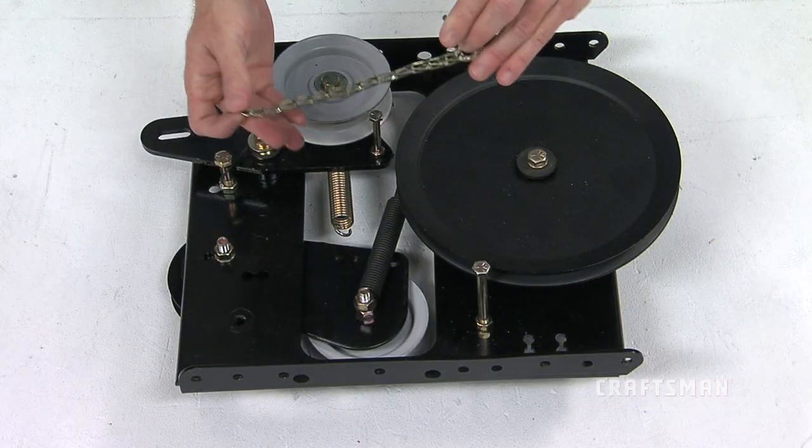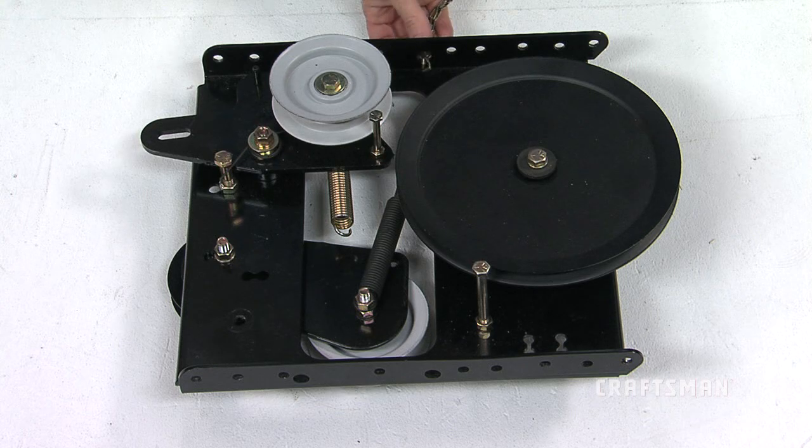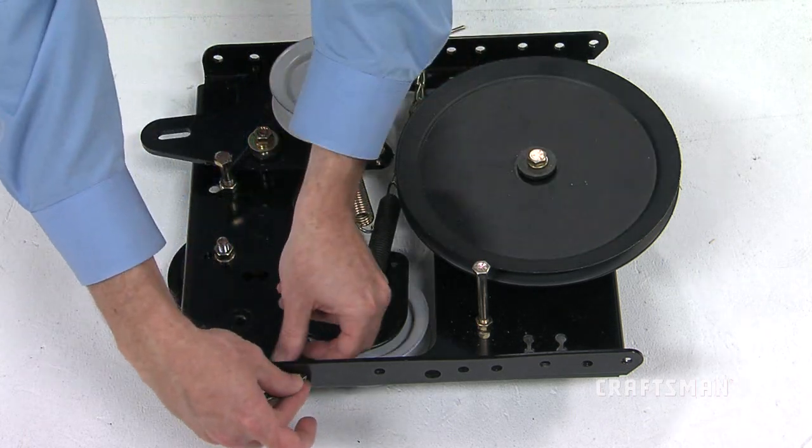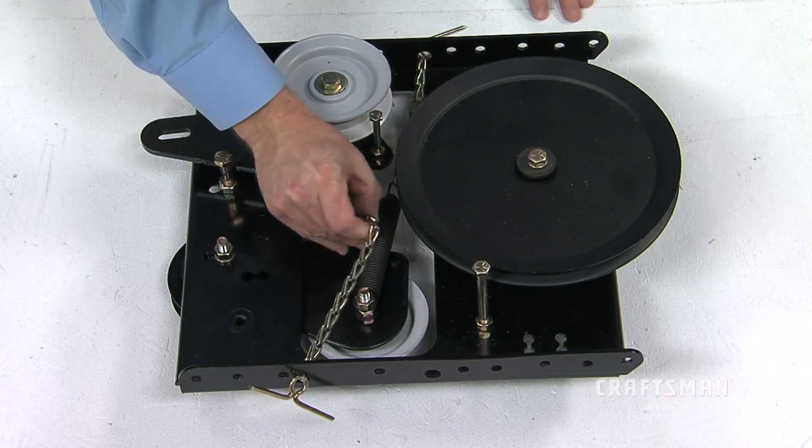Next, insert the tensioning chains, part WW, into the holes shown, and then attach them to the springs on the upper and lower idler arms.